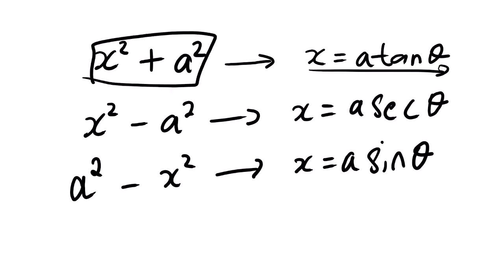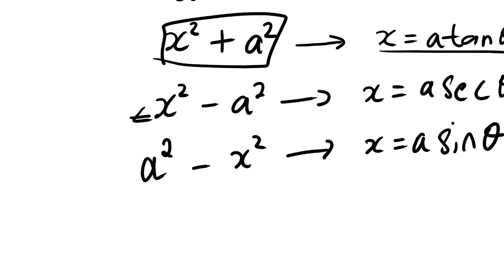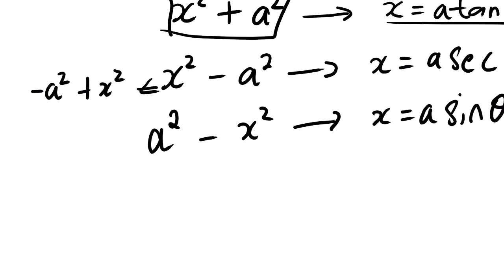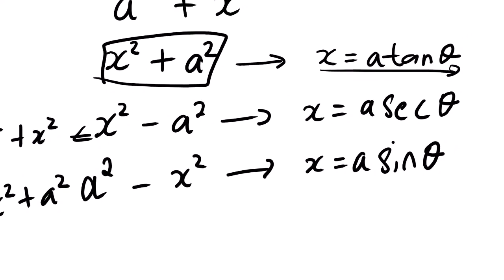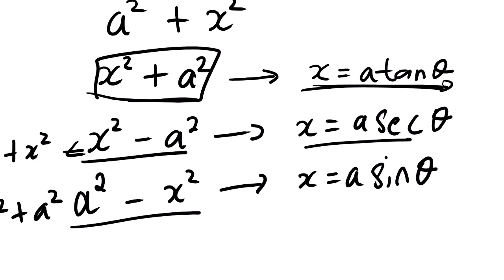Now this one — a squared plus x squared — is the same substitution rule. The same goes for negative a squared plus x squared, and also negative x squared plus a squared. So basically write these notes down: for x squared plus a squared we let x equal to a tan theta; for x squared minus a squared we let x equal to a sec theta; and for a squared minus x squared we let x equal to a sin theta.